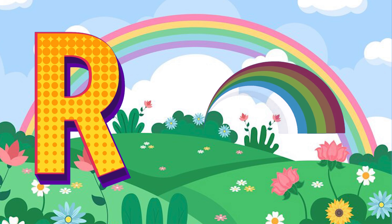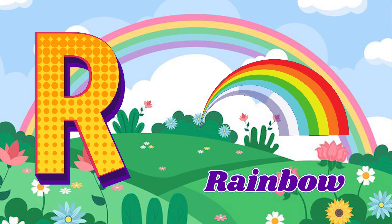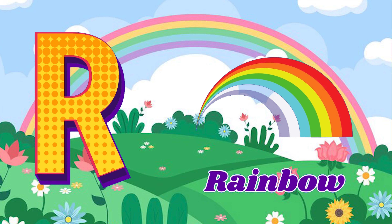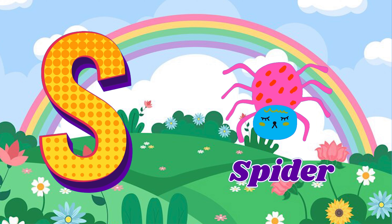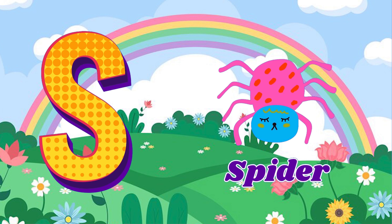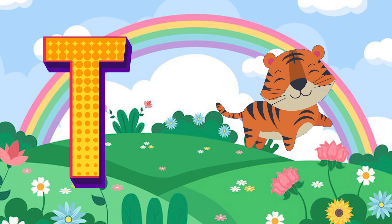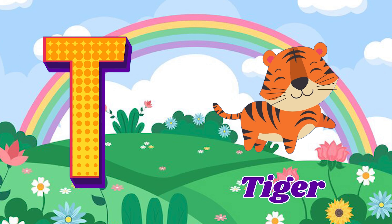R is for rainbow. R, rainbow. S is for spider. S, spider. T is for tiger. T, tiger.